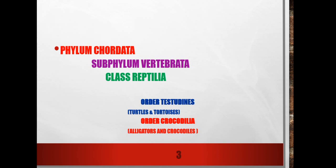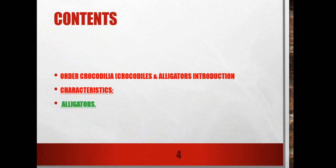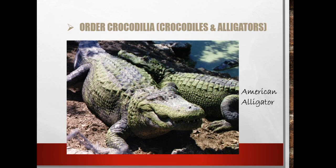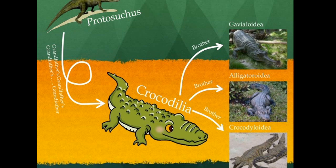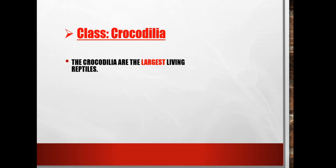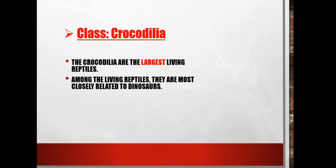The examples of this order are the Alligators and the Crocodiles. They are the largest living reptiles. Among the living reptiles, they are the most closely related to dinosaurs.